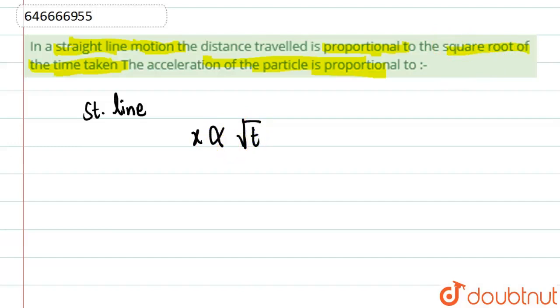So if we bring the equal to sign, equality, then we have to bring a constant k. Let's suppose k under root t, where k is any constant, any proportionality constant.